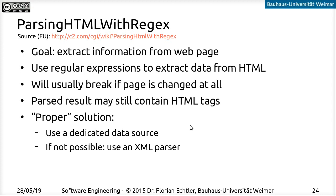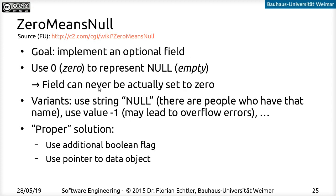Another very common anti-pattern is called zero means null. The idea here is that you have a field that holds an integer or a string, and you want to represent that this field doesn't actually contain any valid data. What the anti-pattern does is use zero — the value null for an integer, or actually the value null for a string — to represent the zero pointer, which means that it's empty. That means whenever you want to give that field a proper value which by coincidence is zero, you can't do that, because the software will interpret that as not having a value.